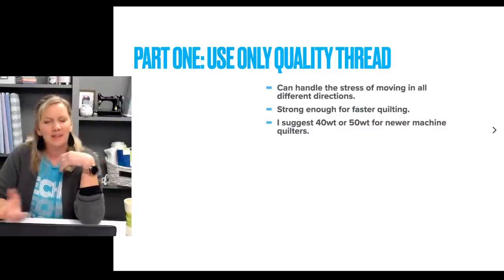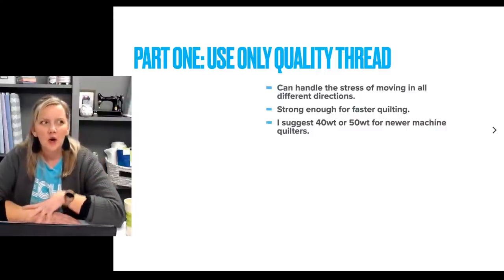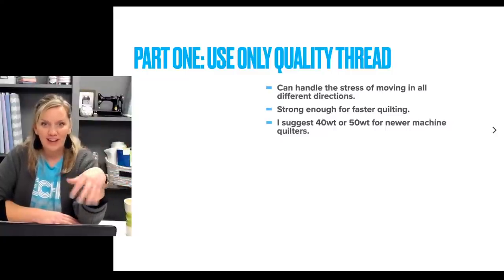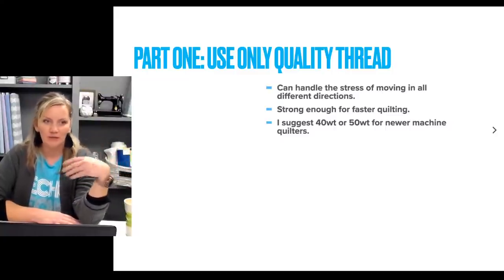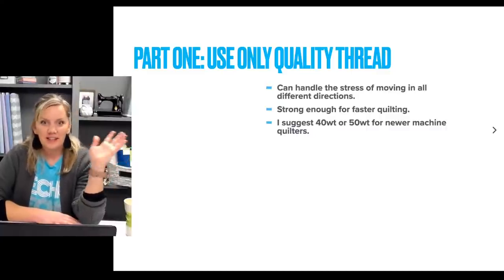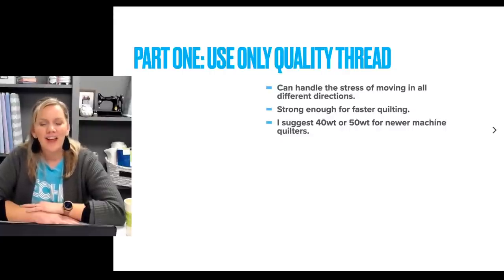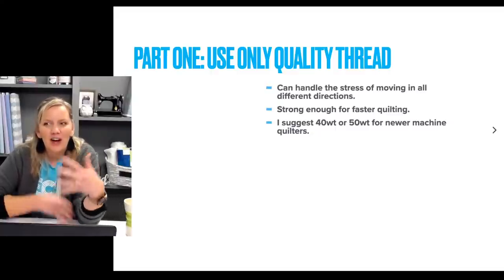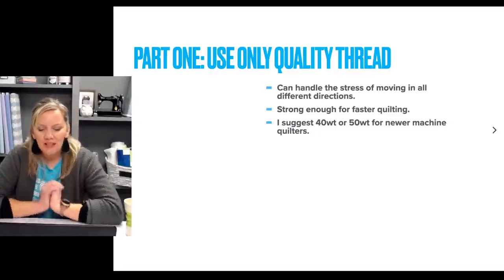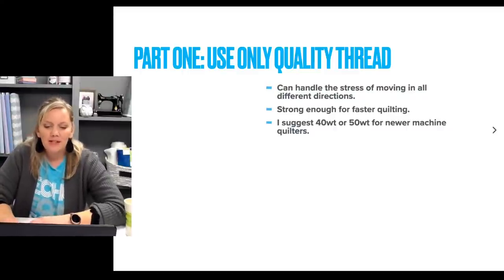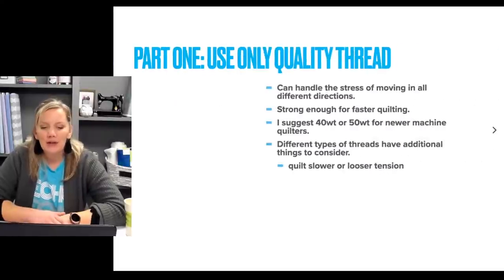Steffi asked: she does fine with 40 or 50 weight, but wants to use thinner threads. Thread weights go from 40, 50, 60, 80, all the way up to 100. Instead of skipping right to 100, I suggested maybe going to a 60 weight first, then an 80 weight like Bottom Line. Kind of tiptoe into it. If you're newer to machine quilting, this is what I would suggest — but I'm only the expert of my own opinion.